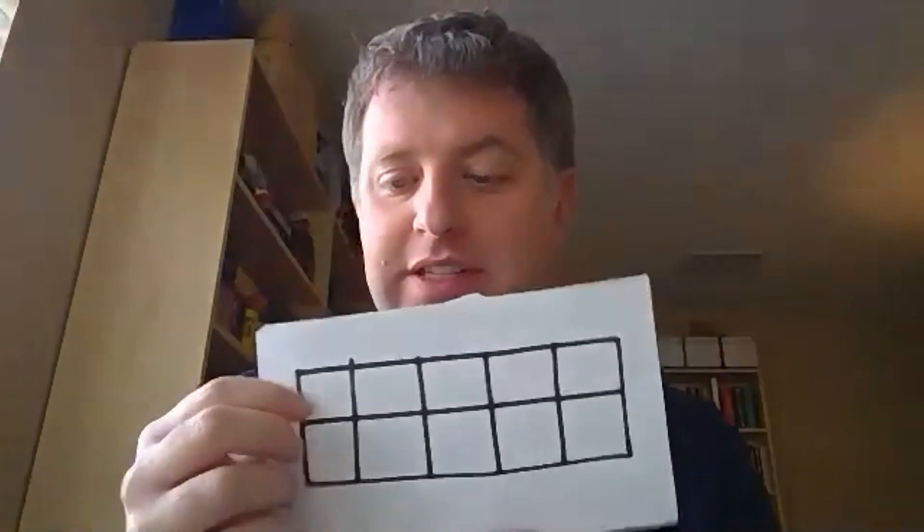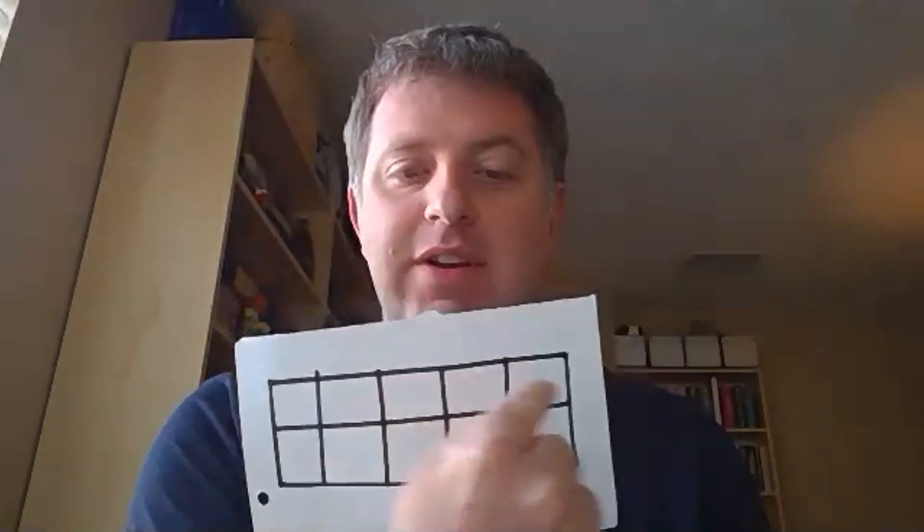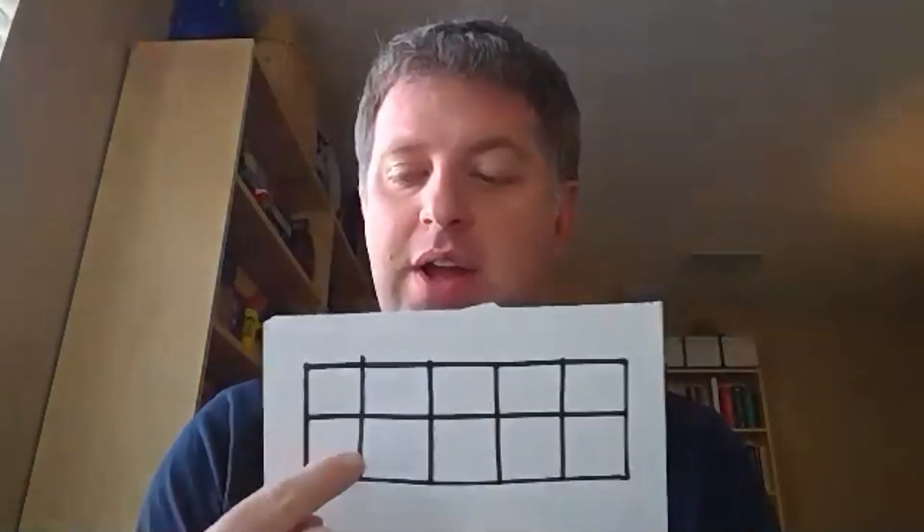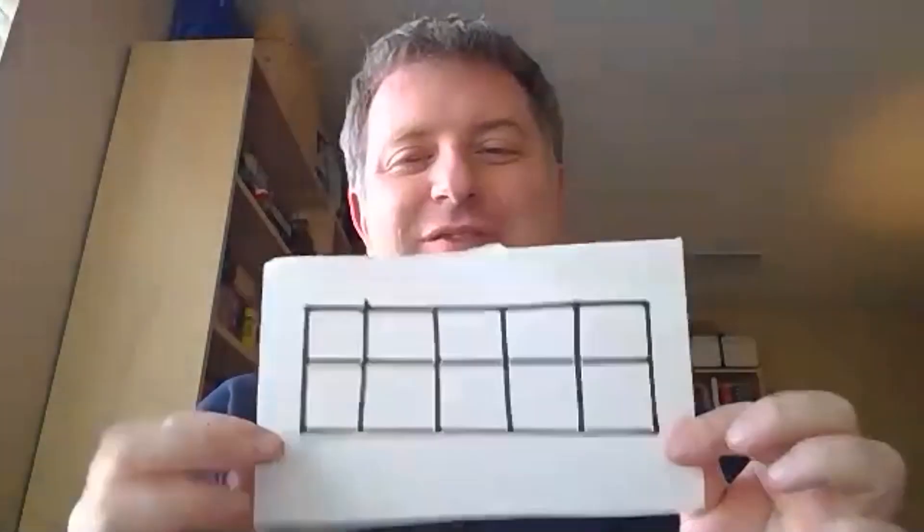If you'd like to play, you need a dice — or a die. You also need a 10 frame. I made my own 10 frame. It's five squares at the top — one, two, three, four, five — and five squares at the bottom — one, two, three, four, five. That makes 10, friends.